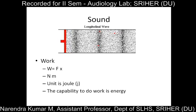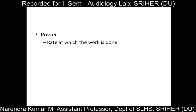We need energy to do a particular work. Power is the rate at which work is done. When there is more power, work is done at a faster rate, meaning it takes only a shorter duration to complete. When the power is less, we tend to take more time to complete the same work. So power is defined as work done per unit time — joules per second — and the unit is watt.